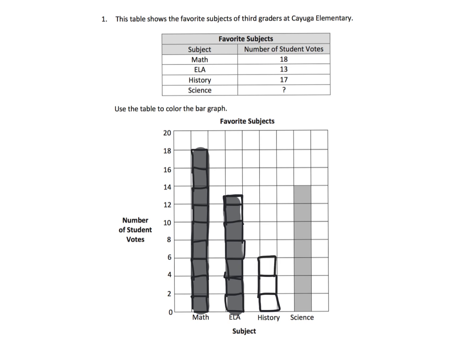History has 17 students, so I'm going to speed this along: two, four, six, eight, ten, twelve, fourteen, sixteen, and then half of that remaining box, which represents just one person — because each box represents two. Now we can shade that in.